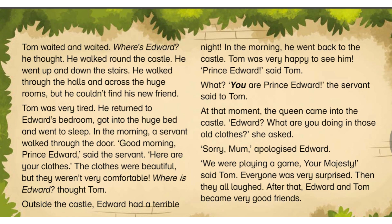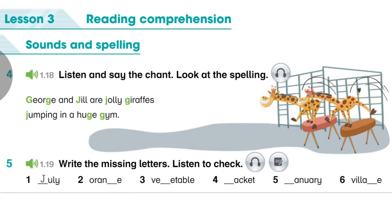Track 1.18. Unit 2, Lesson 3, Activity 4. George and Jill are jolly giraffes jumping in a huge gym. George and Jill are jolly giraffes jumping in a huge gym. Now say the missing words: George and Jill are jolly giraffes in a huge gym. Jumping! George and Jill, George and Jill are jolly giraffes jumping in a huge gym.